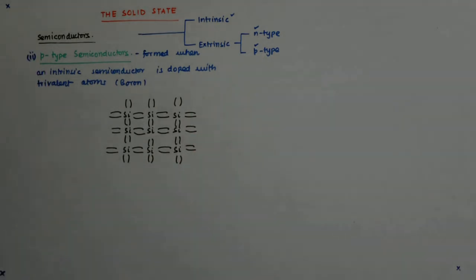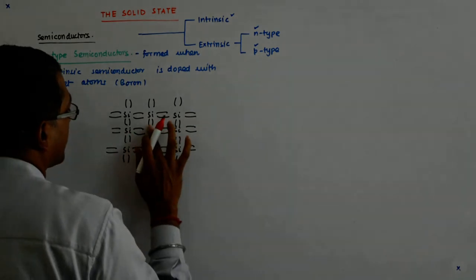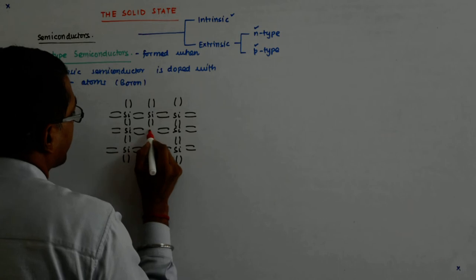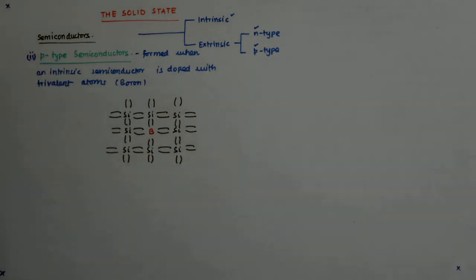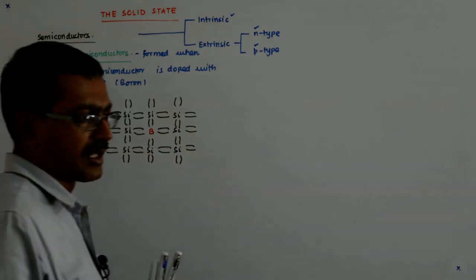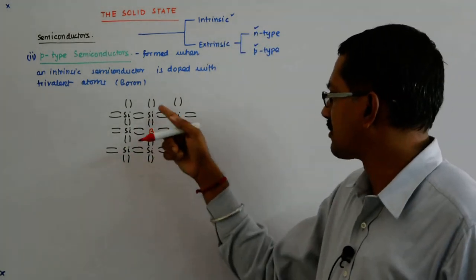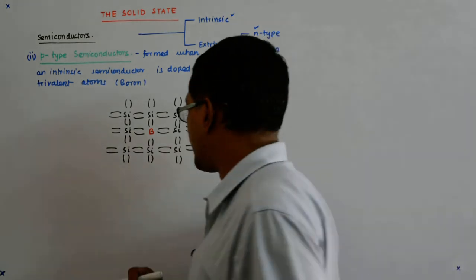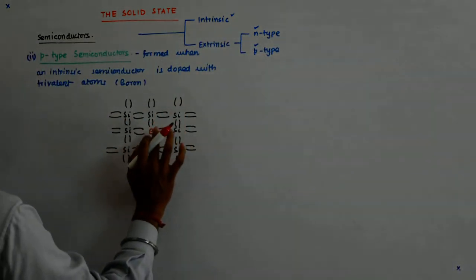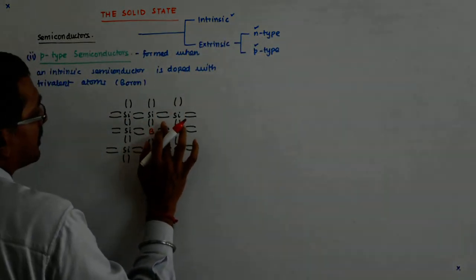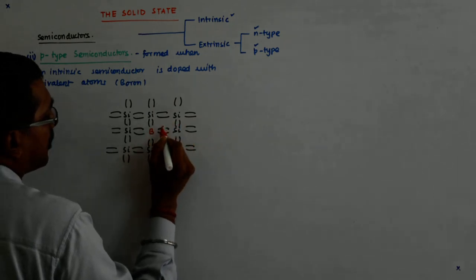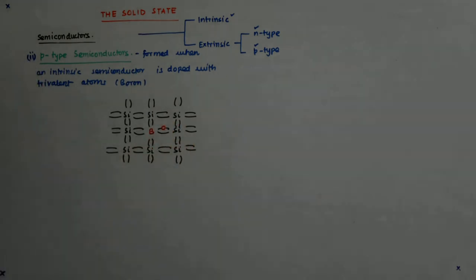Now what happens? Say one of the atoms gets replaced by boron. Now boron is trivalent, so what happens? Three of its electrons enter into bonding with three of the neighboring silicon atoms, and the fourth one is simply not able to bond. That means this, which looks like a bond, is actually a hole.